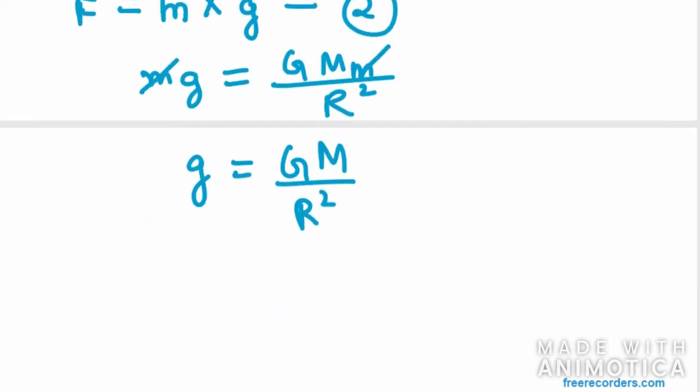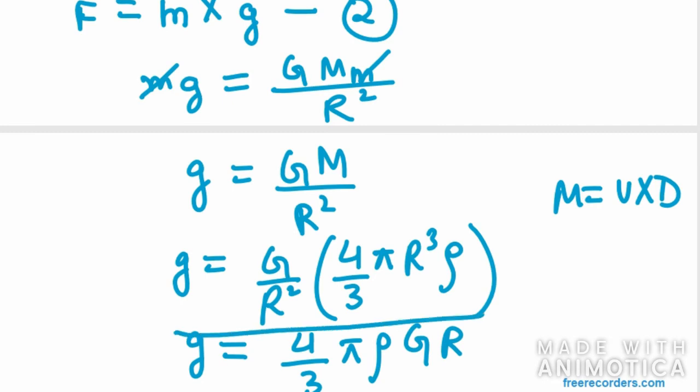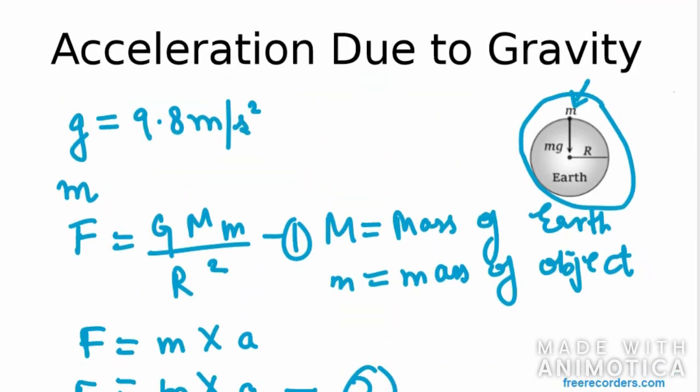As you know, the body is a sphere. So mass is replaced by 4 over 3 pi R cubed times rho. That is, mass equals volume into density. So your formula will be g equals 4 by 3 pi rho G R. This is acceleration due to gravity.